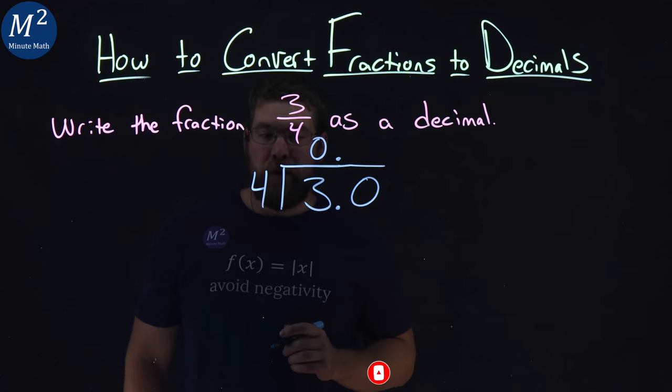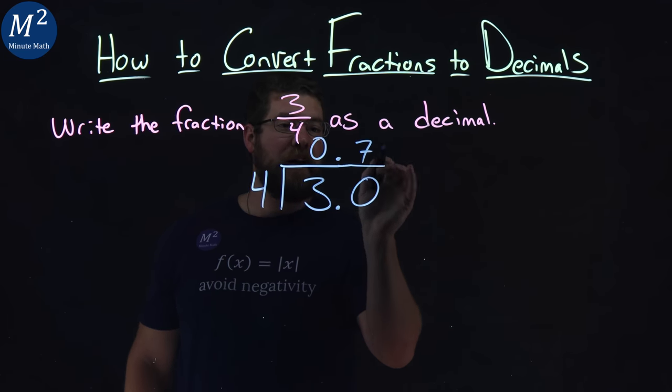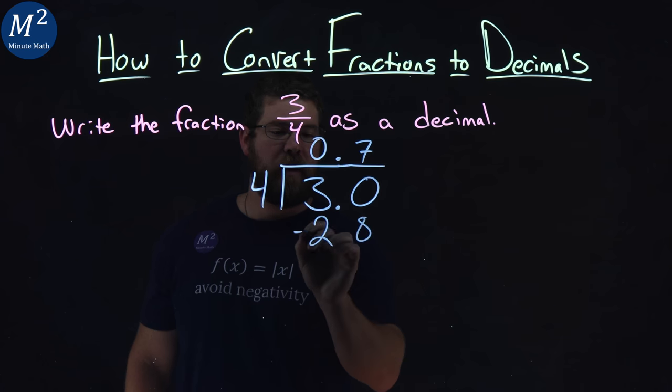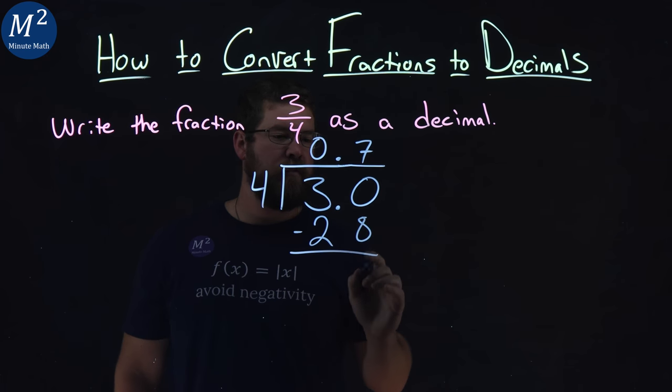So, four goes into 30. Well, that's going to be seven times, because seven times four is 28. Alright, then subtract the two numbers, 30 minus 28 is two.